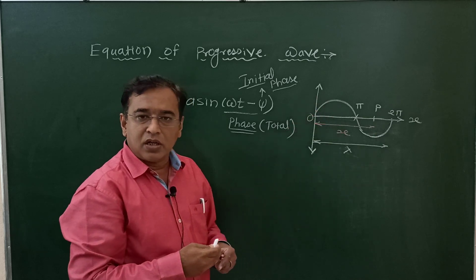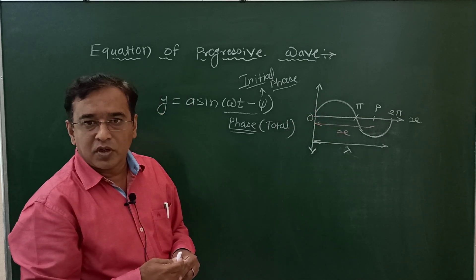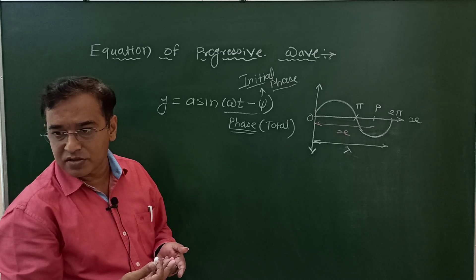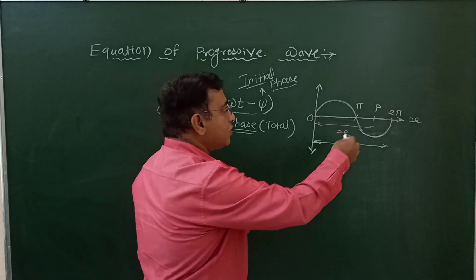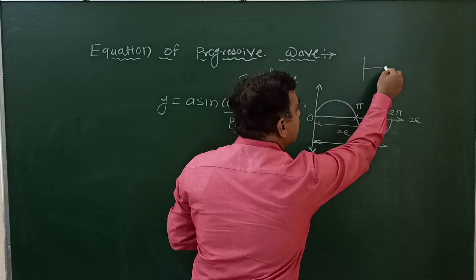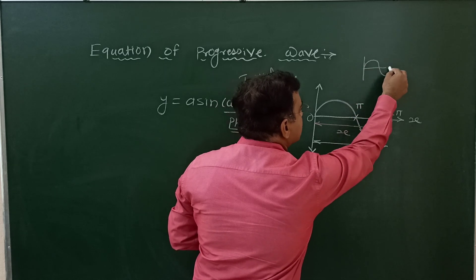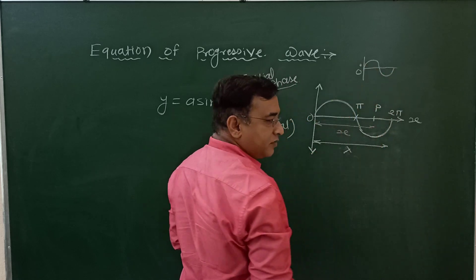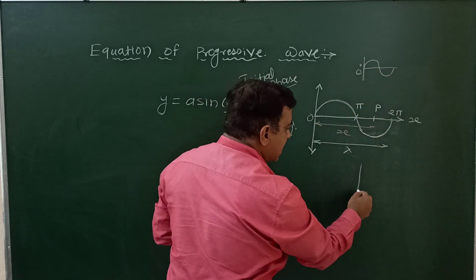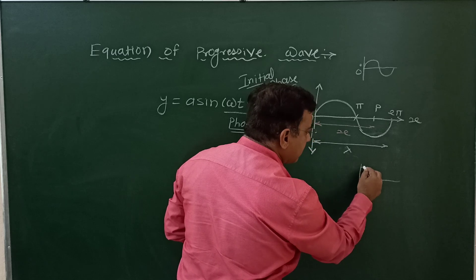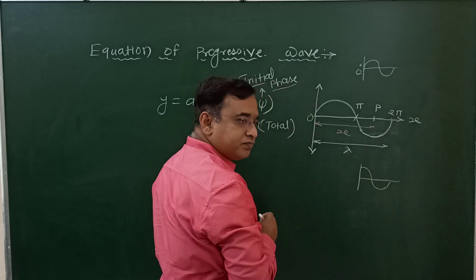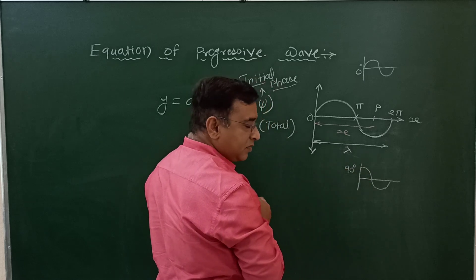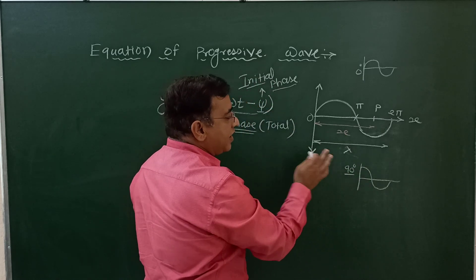When the wave starts, it will never start from zero. It may start from 90 degrees out of phase. It may start from 180 degrees out of phase. If the wave starts from zero, it is starting from zero degrees. If it starts from 90 degrees, that time the initial phase of the wave is 90 degrees, so its phi value is 90.